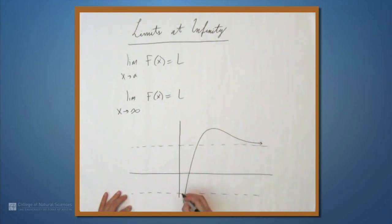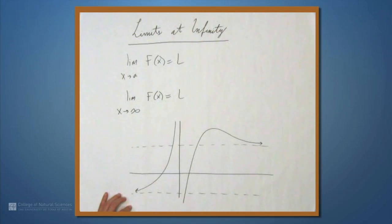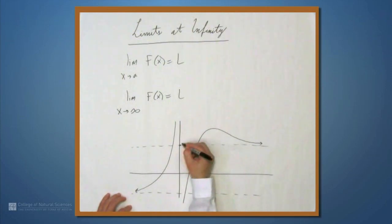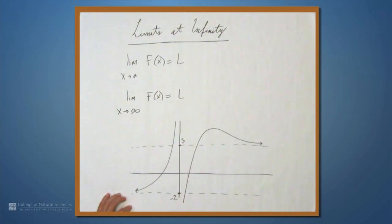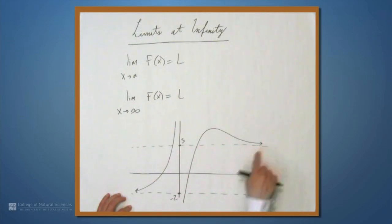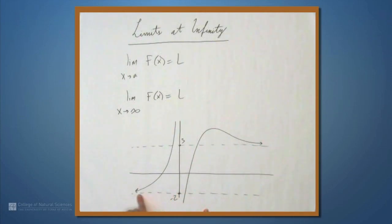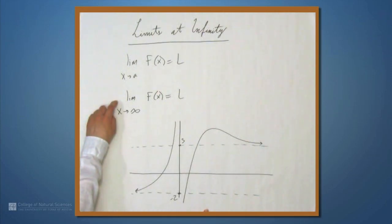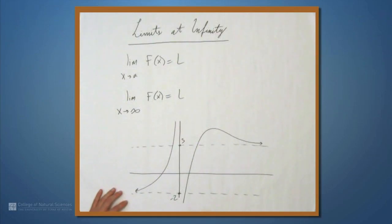something like this, and then maybe something like this — let's make this 3 and let's make this negative 2. The limit as you go to positive infinity is 3, because we have a horizontal asymptote here. And the limit as we go to negative infinity is negative 2, because we have a horizontal asymptote here. So this isn't a new idea; it's just a new way of expressing something you've already seen.